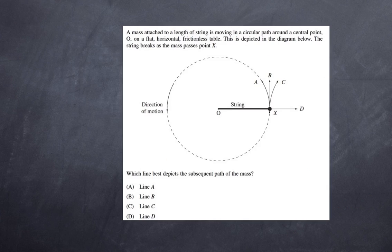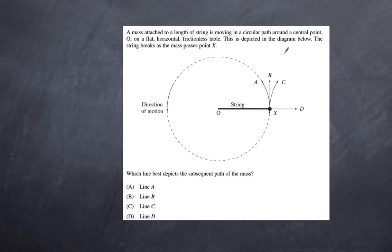A mass is attached to a length of string and is moving in a circular path around a central point O on a flat horizontal frictionless table. The string breaks as the mass passes point X. Which line best depicts the subsequent path of the mass? I'll give you a moment to work it out.